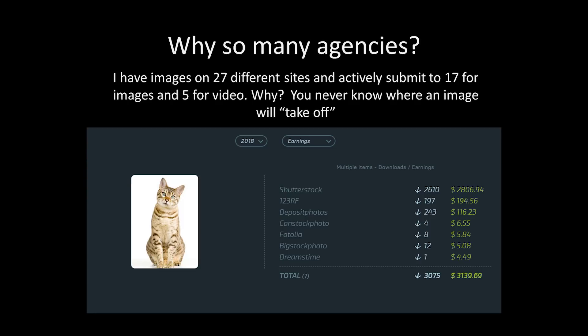On Shutterstock the cat has been downloaded 2,600 times and earned $2,800. On Fotolia (now Adobe Stock) it's been downloaded 8 times and earned $5.84. On some sites it got traction; on others — with exactly the same picture — it went nowhere. That's partly why I upload to lots of sites; you never know whether it's going to get traction or not. There's an element of luck — it must have triggered something in the early days.